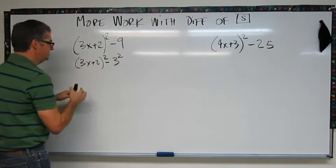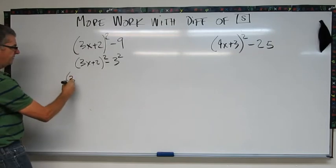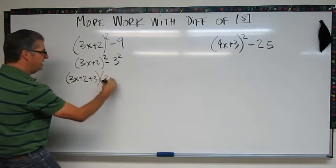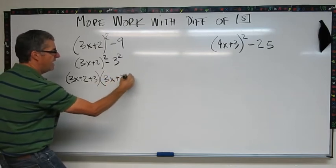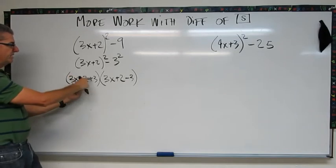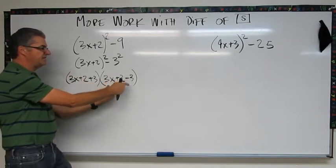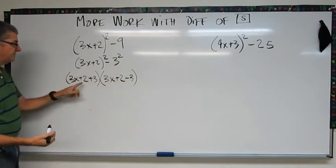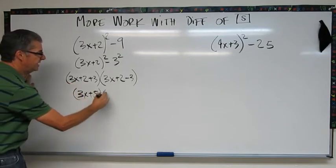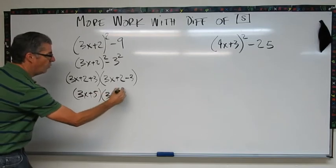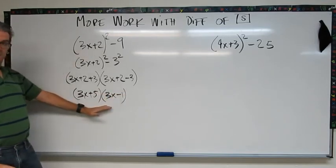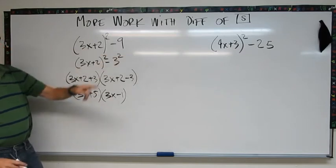Now the next step is going to be this thing plus this, times this thing minus this. So let's do that. This is going to be 3x plus 2 plus 3, times 3x plus 2 minus 3. Now I can combine some stuff because I have a 2 and a 3, so this is 3x plus 5 times 3x minus 1. Okay, now if you feel ready, try it on that one.